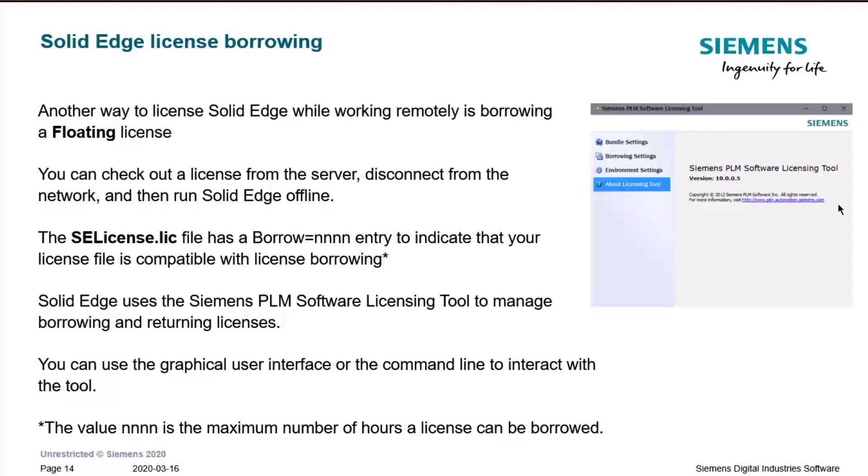The Solid Edge license.lic file contains all licensing information. It usually has an entry 'BORROW=NNNN', which indicates that your license file is compatible with license borrowing. This value represents the maximum number of hours the license can be borrowed. Solid Edge uses the Siemens PLM software licensing tool to manage borrowing and returning licenses, accessible under the Solid Edge folder in your Start programs directory. You can use a graphical user interface or command line.